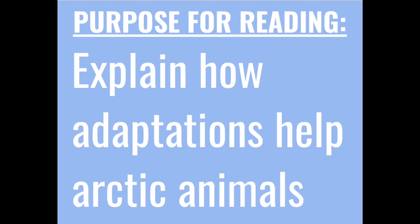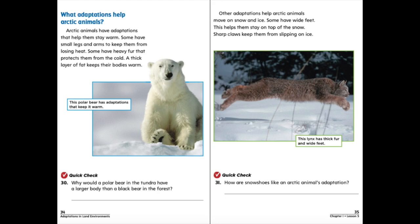Our purpose for reading today is to be able to explain how adaptations help arctic animals. Arctic animals have adaptations that help them stay warm. Some have small legs and arms to keep them from losing heat. Some have heavy fur that protects them from the cold. A thick layer of fat keeps their bodies warm. Other adaptations help arctic animals move on snow and ice. Some have wide feet to help them stay on top of the snow. Sharp claws keep them from slipping on ice.